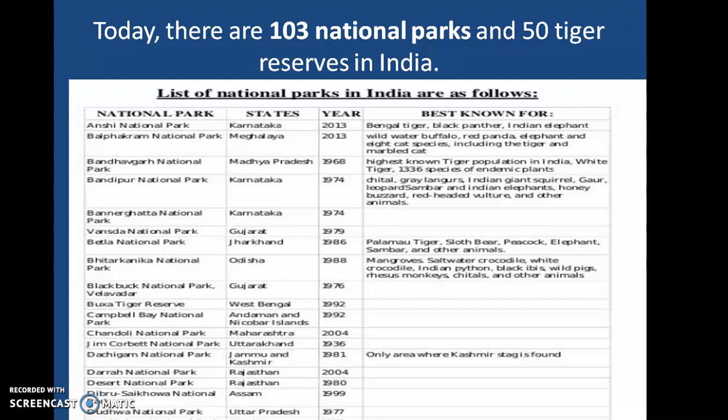There are about 103 national parks and 50 tiger reserves in India. Tigers are in danger now and their numbers are declining day by day because of poaching and human activities. National parks are totally protected areas where only tourism is permitted, and these reserves are large and diverse enough to protect whole sets of ecosystems. They preserve flora, fauna, landscape, and historic objects of an area.